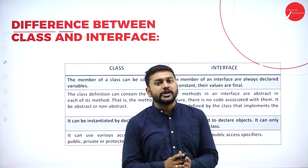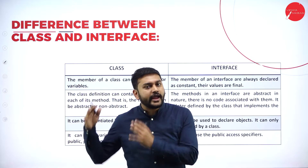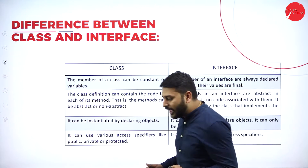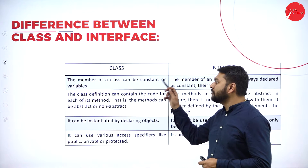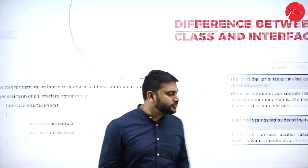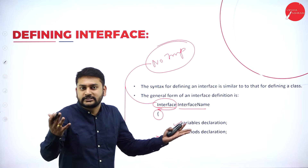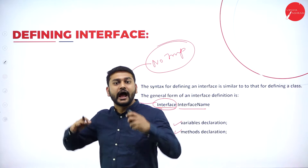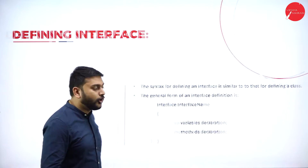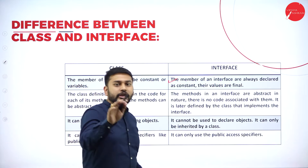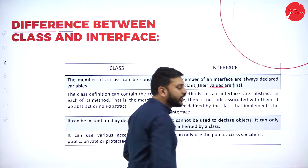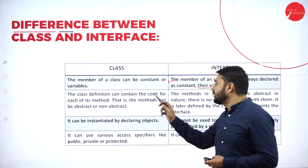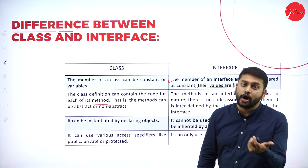To better understand interfaces, let me compare them with classes. The first point: a member of a class can be a constant or a variable — as a developer you have the option. But in an interface, the variable must be a constant by default, and its value is final. The second point: a class definition can contain code for each of its methods — methods can be abstract or non-abstract.